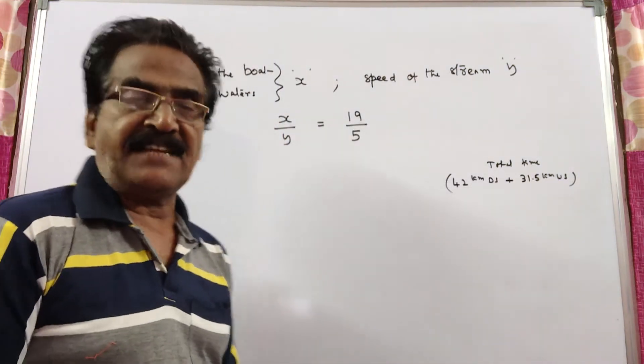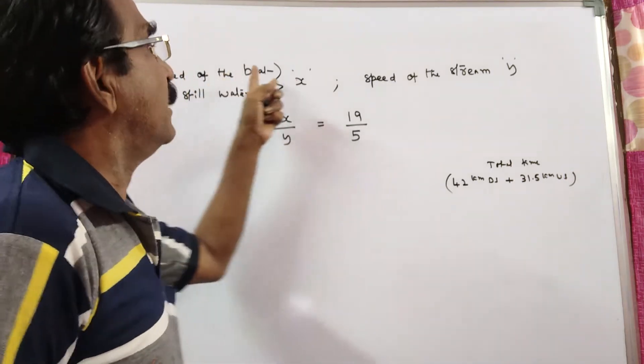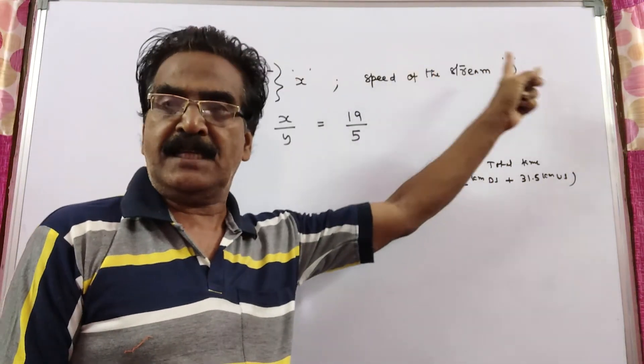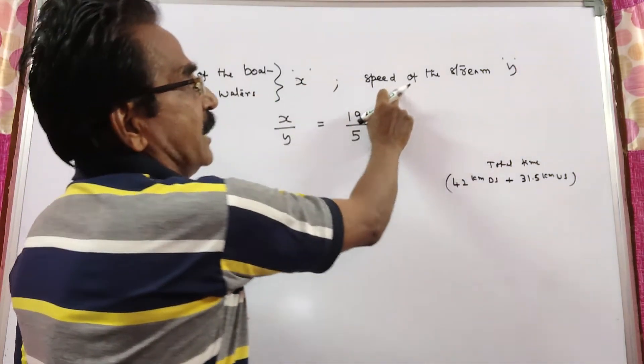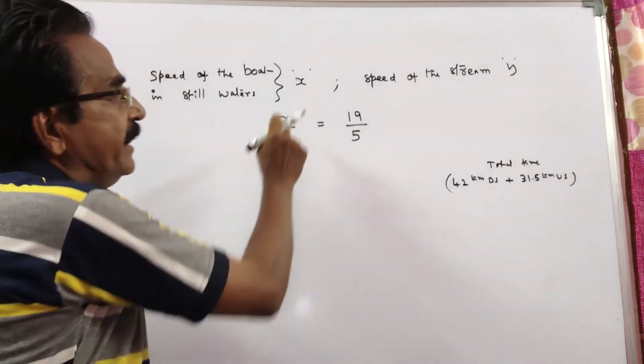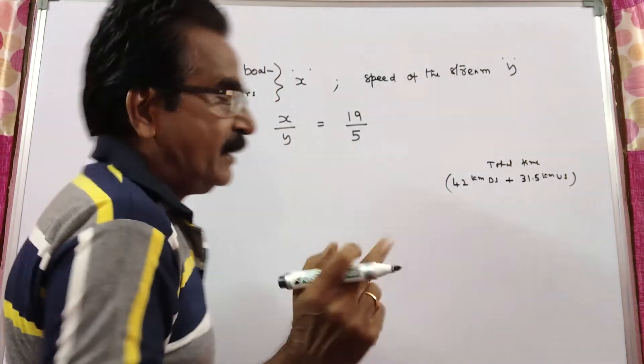Friends, in the problem it is given the ratio of speed of the boat and speed of the stream. Say, speed of the boat X in still water and speed of the stream Y, then X by Y is given. X by Y is equal to 19 by 5. Also,